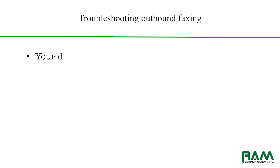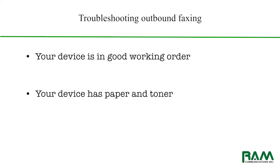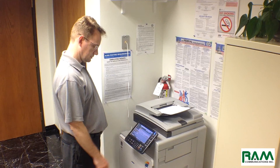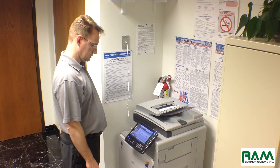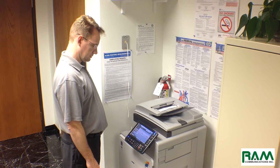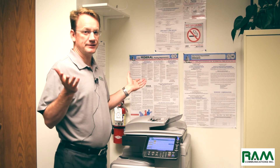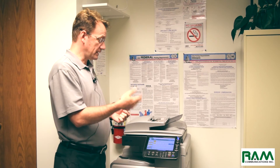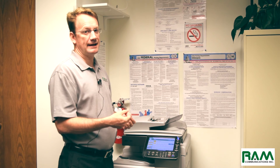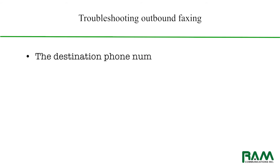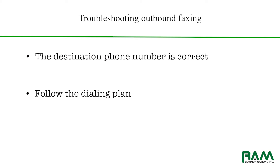Like inbound faxing, make sure that your device is in good working order — you've got paper, you have toner, and most importantly, you have dial tone to the device. You load up your fax and send your documents. Make sure that you don't have any paper jams; if you get any type of a paper jam, follow the instructions on your device, clear everything out, and start again. For outbound faxing, the most important item is to make certain that the phone number you're dialing is correct. Follow the dialing plan properly and you should not have a problem getting to that fax device.